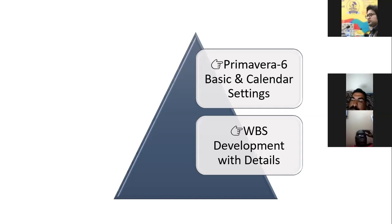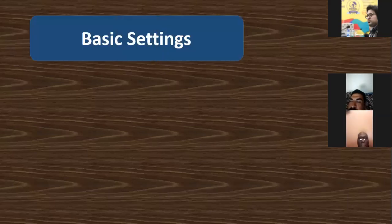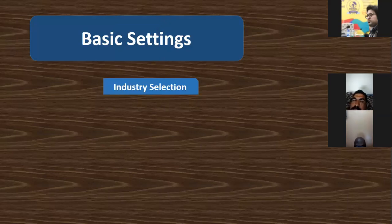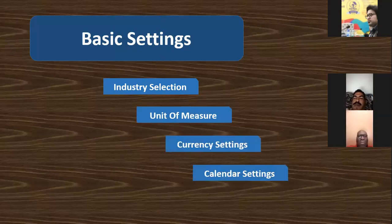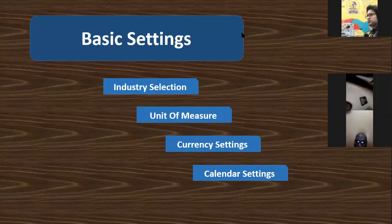The primary four basic settings are: industry selection — which industry you are going to work in — then unit of measure, currency settings, and calendar settings. These four things are required at this level to let Primavera know what our priorities are.